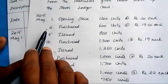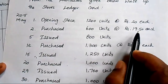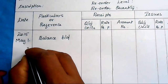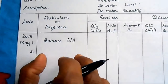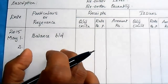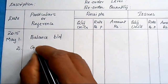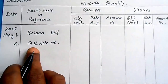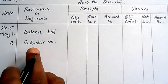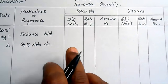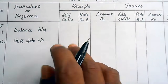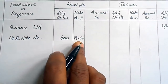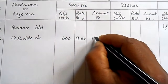On 2nd May 2015, purchased 600 units at ₹19.50 each. Enter this in the receipt column and write the Goods Received Note number as reference. Quantity: 600 units. Rate: ₹19.50. Amount: 600 × 19.50 = ₹11,700.